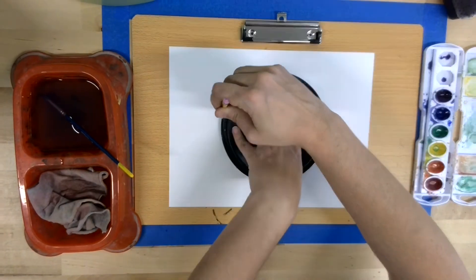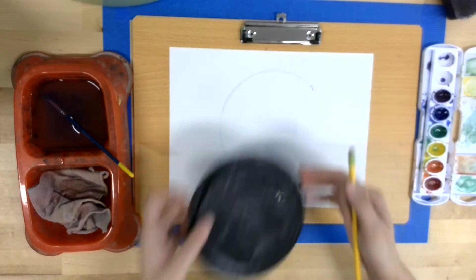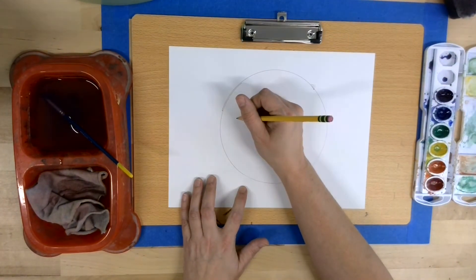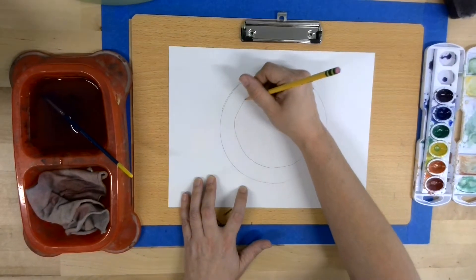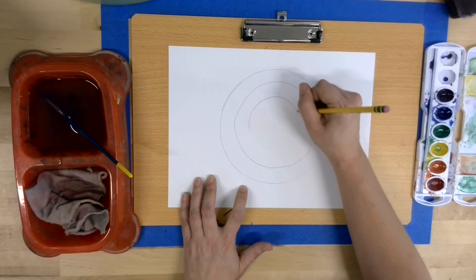Take the plate, and in my case, it is a lid for a container, and use your pencil to trace it. We are going to use this circle as a guide for additional circles that will be inside of it.